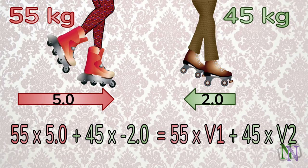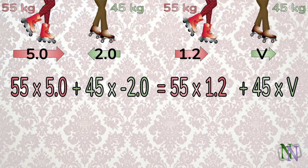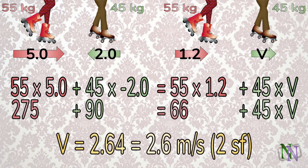For example, let's imagine that the 55 kilogram skater continues after the collision at 1.2 metres per second. Now when we substitute the 1.2 we can use it to make an equation with one unknown. And then we can find the individual momenta and solve the equation to show that the final velocity of the second skater is 2.64 metres per second.